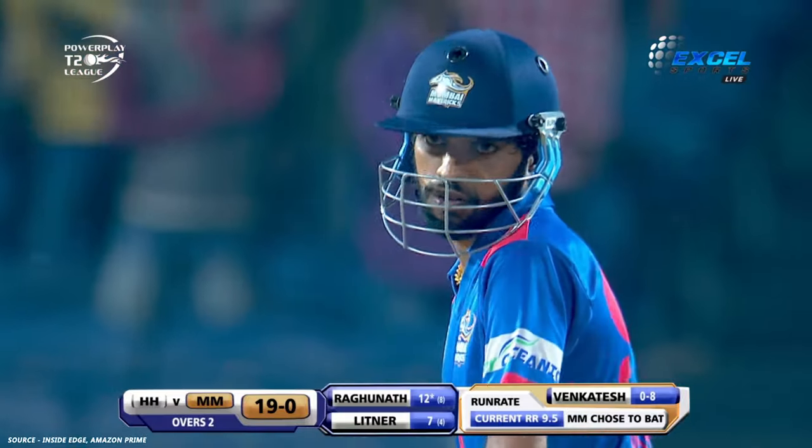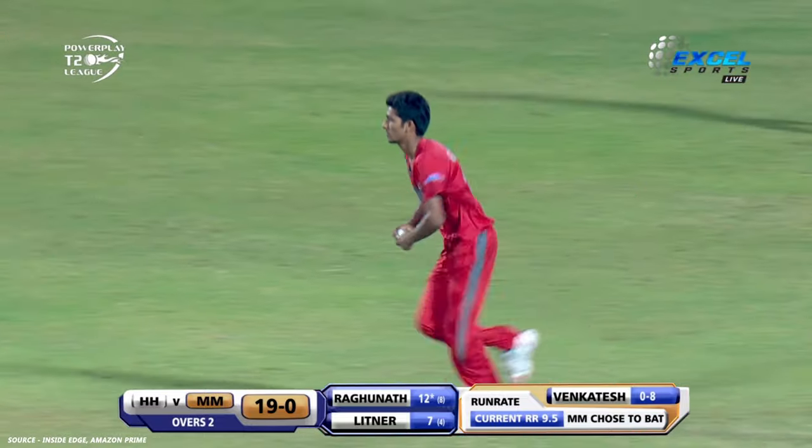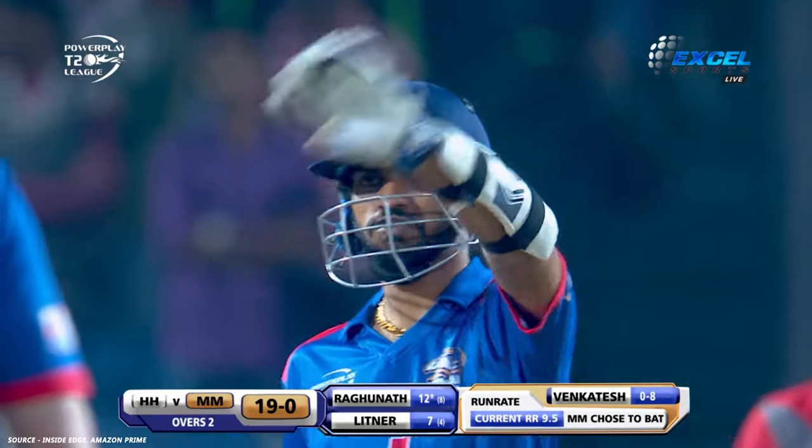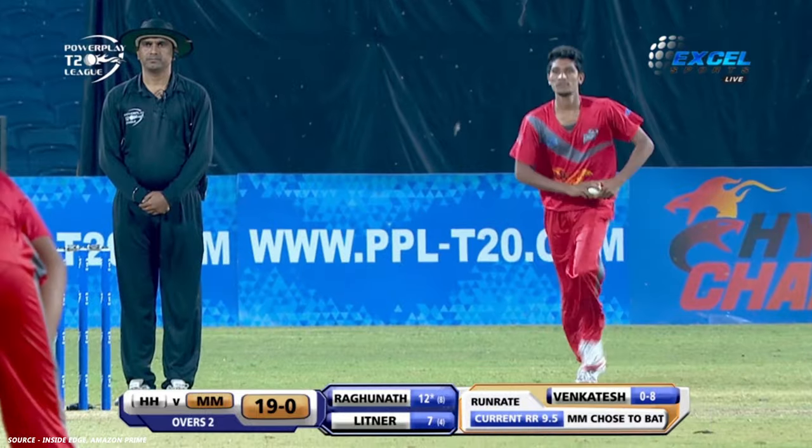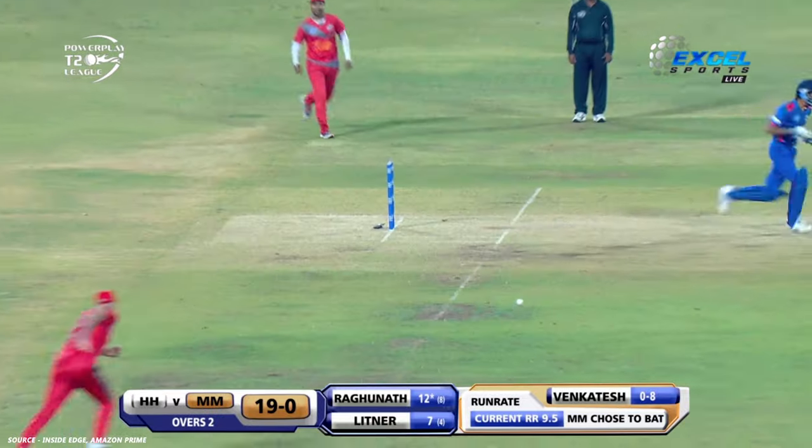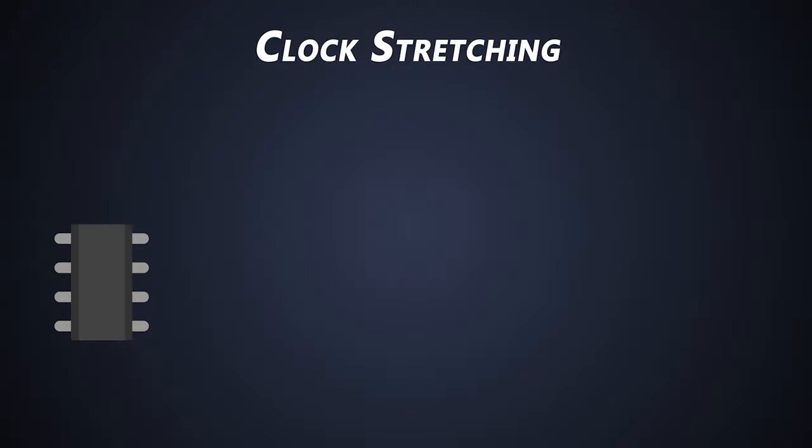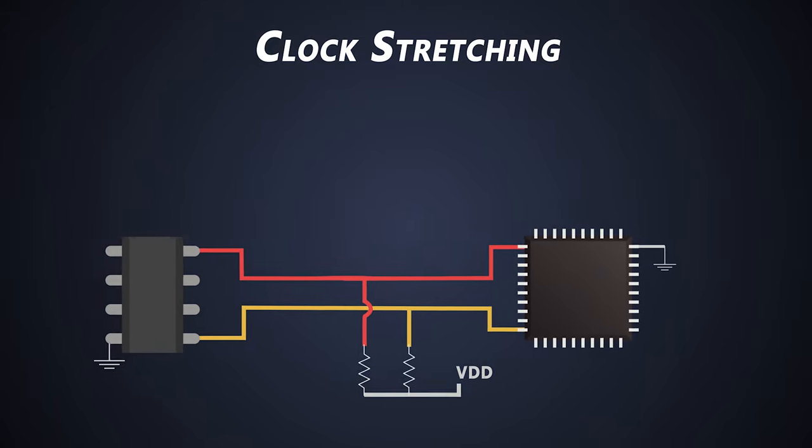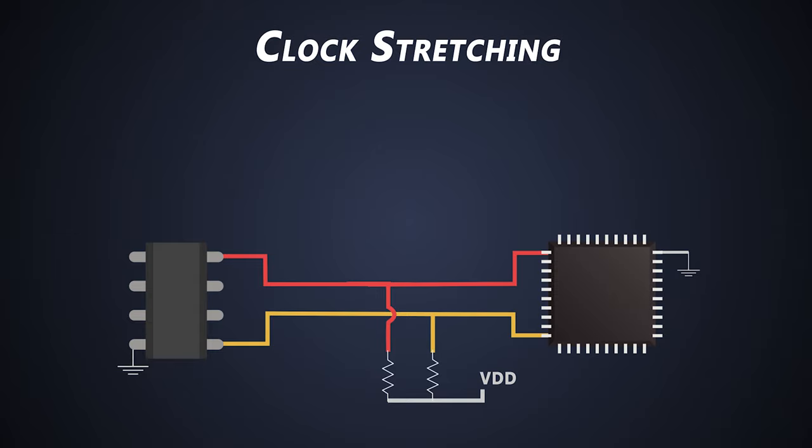Let's see the concept of clock stretching. In cricket, while playing, the batsman takes his guard on the pitch to play the ball. If the batsman is not ready, he'll leave the pitch and tell the bowler to hold until he gets ready for the delivery. Just like that, master wants to transmit data, but the slave is not ready to receive it. So there needs to be some mechanism to handle this condition.